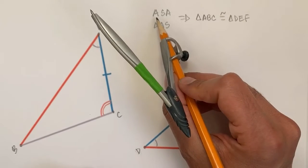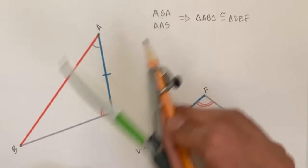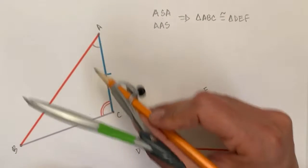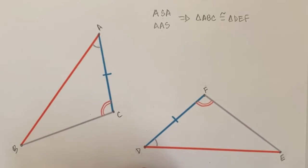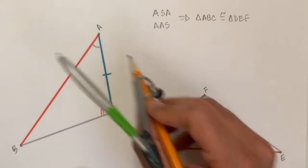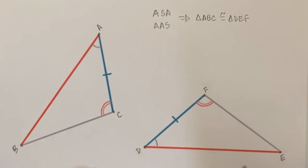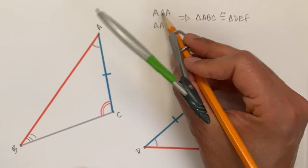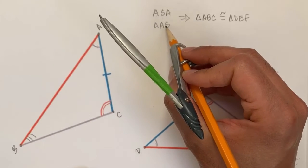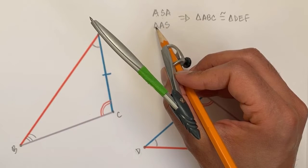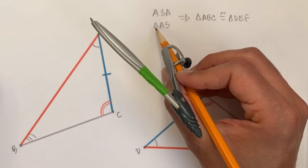The reason I wrote both angle-side-angle and angle-angle-side is to show that these are equivalent. Because if you have two angles, you know what the third angle is going to be. So if we know two pairs of angles have the same measure, then the third pair must have the same measure as well. Having the side between the two angles is equivalent to having an angle, an angle, and a side, because the third angle is also determined.